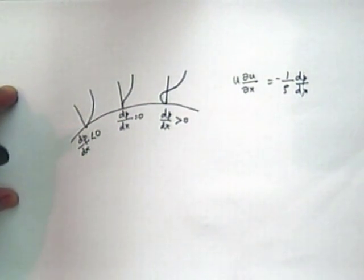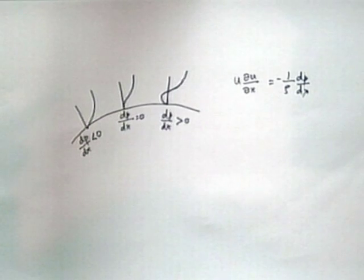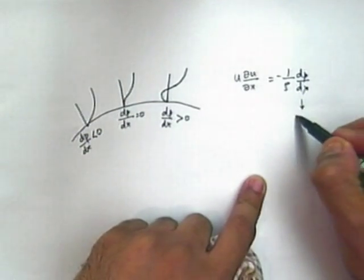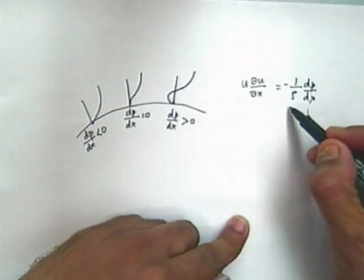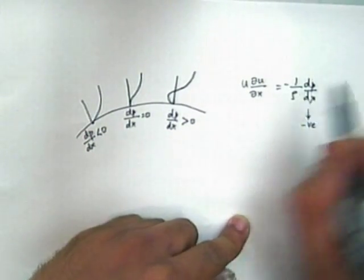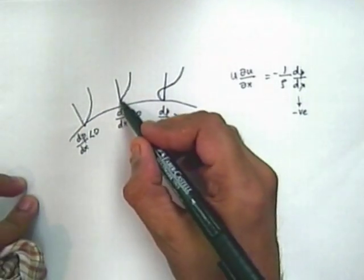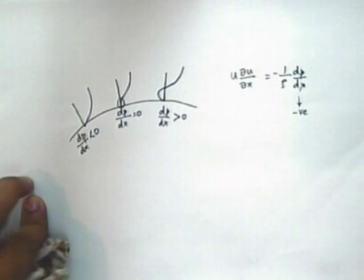What is the left hand side of this equation? It is essentially the momentum associated with the fluid. This momentum is balanced by the pressure gradient. When dp by dx is negative in normal flow, it is called favorable because it is favorable for the flow to occur. This value is normally negative, meaning u du by dx is greater than 0.